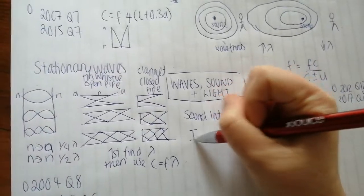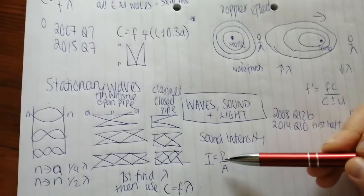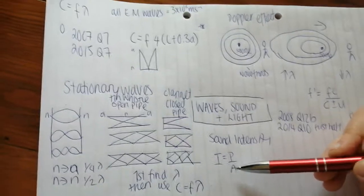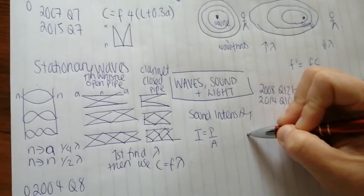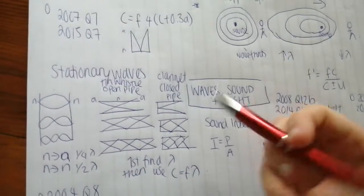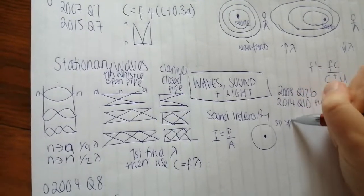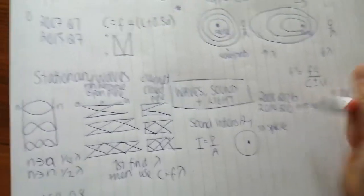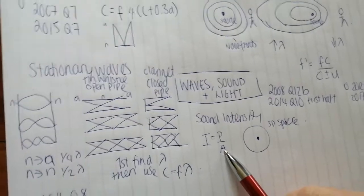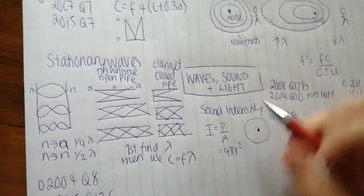Sound intensity is power over area. So it's the amount of sound per second. So that's the power bit. Sound per second going through a particular area. So when you're doing questions like this, you normally have an object or a source producing sound, and the sound is going in all directions. So if you think that this is coming out in all directions, the shape it's actually making is a 3D sphere.